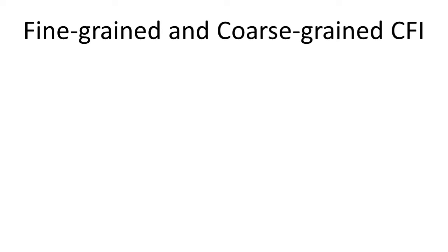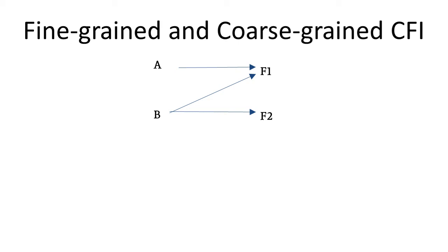CFI can be implemented on different levels of precision. IDs and ID checks may be more permissive than necessary. For example, consider two call points A and B: point A can call function F1, while point B can call F1 and F2. In coarse-grained CFI, we could give them both the same label, meaning function F2 can still be incorrectly returned to point A without detection. Some coarse-grained implementations go even further and allow a return to go anywhere in the code as long as it is after a dynamic call instruction. The reasoning is that even with this loss in precision, CFI is still restrictive enough — for instance, functions cannot return in the middle of another function.